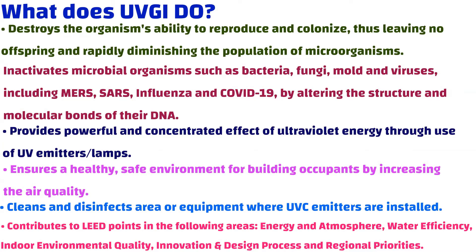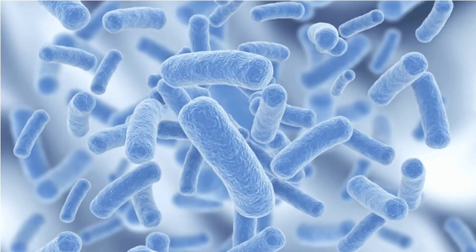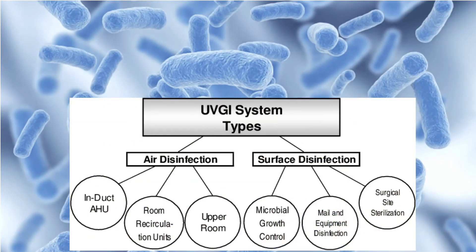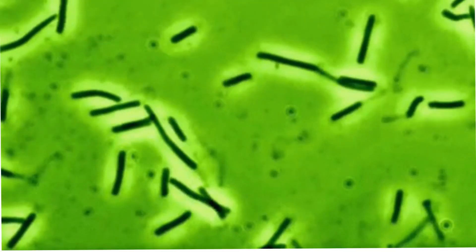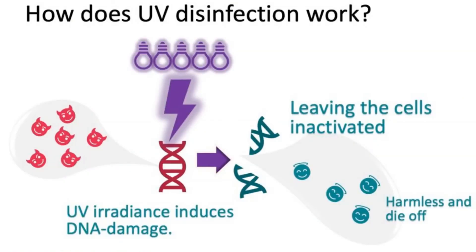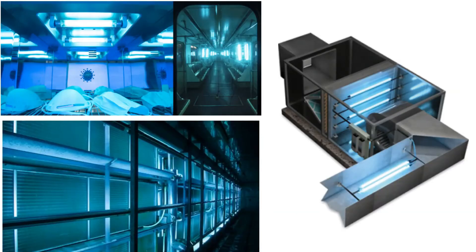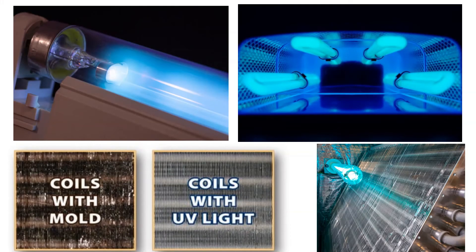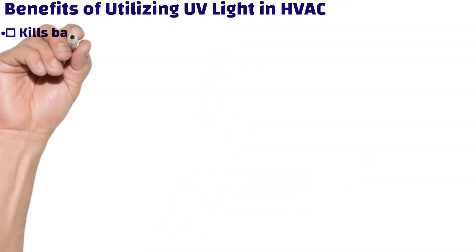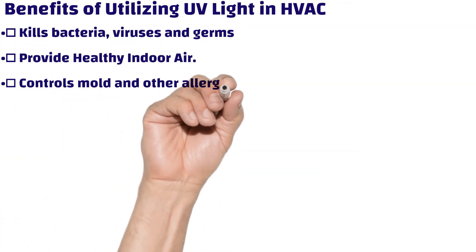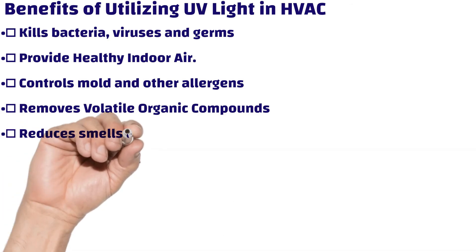There are two types of UVGI disinfection systems: air disinfection and surface disinfection. Benefits of utilizing UV light in HVAC systems include: kills bacteria, viruses, and germs; provides healthy indoor air; controls mold and other allergens; removes volatile organic compounds; reduces smells and odors; maintains a cleaner HVAC unit; reduces maintenance requirements; lowers monthly expenses; and promotes healthier living and operational efficiency.